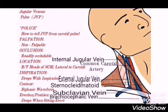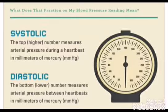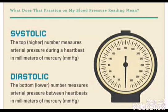High blood pressure is a condition in which the force of the blood against the artery walls is too high. Usually hypertension is defined as blood pressure above 140/90, and is considered severe if the pressure is above 180/120. Everyone would like to have healthy blood pressure. The top number refers to the amount of pressure in your arteries during the contraction of your heart muscle — this is called systolic pressure.